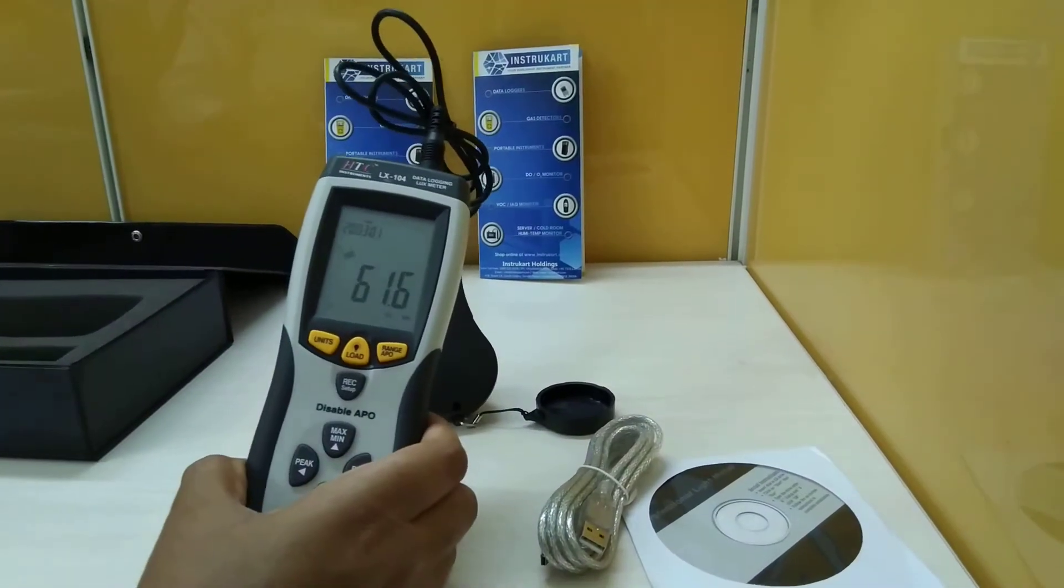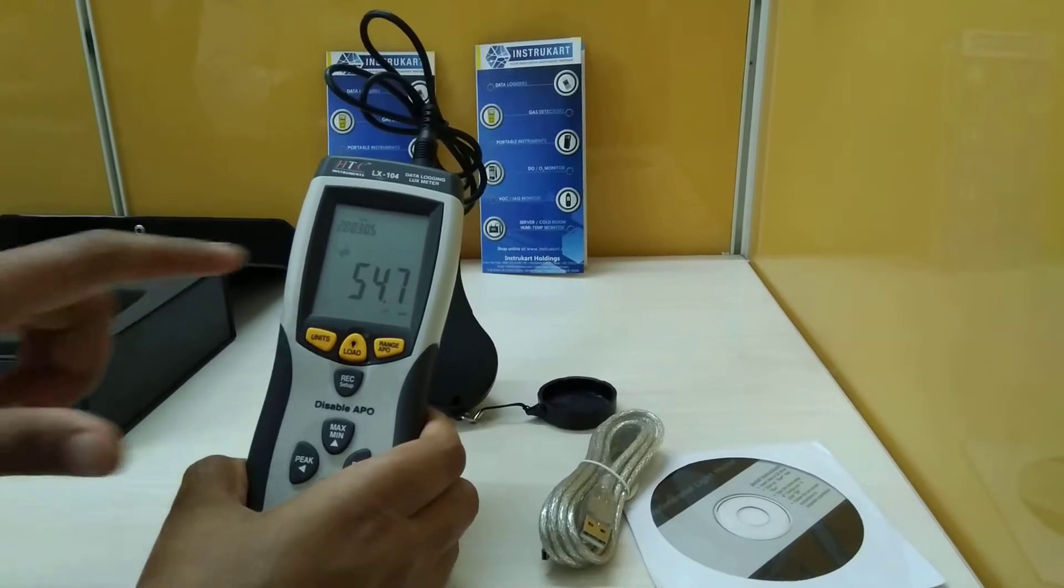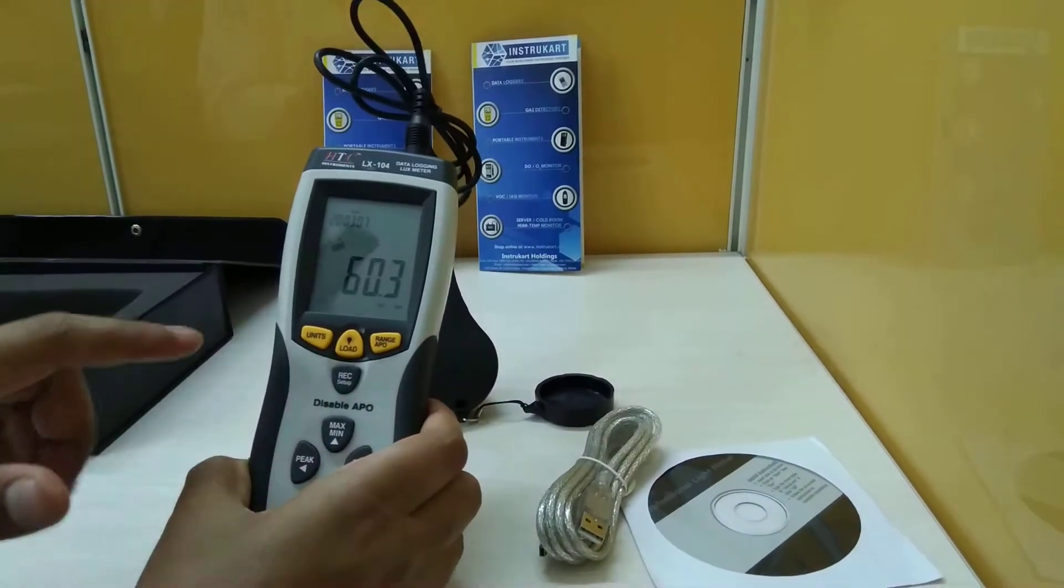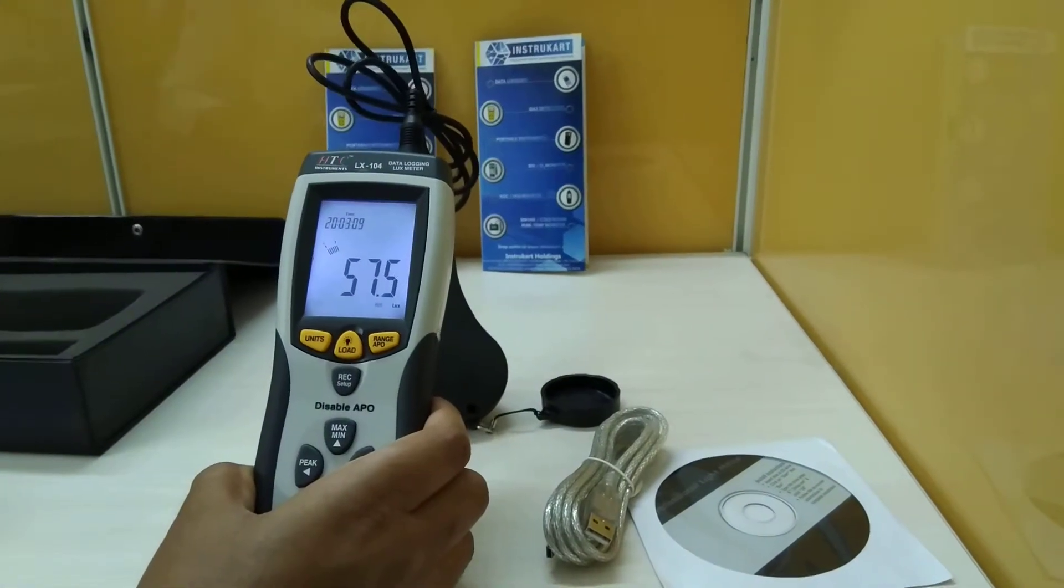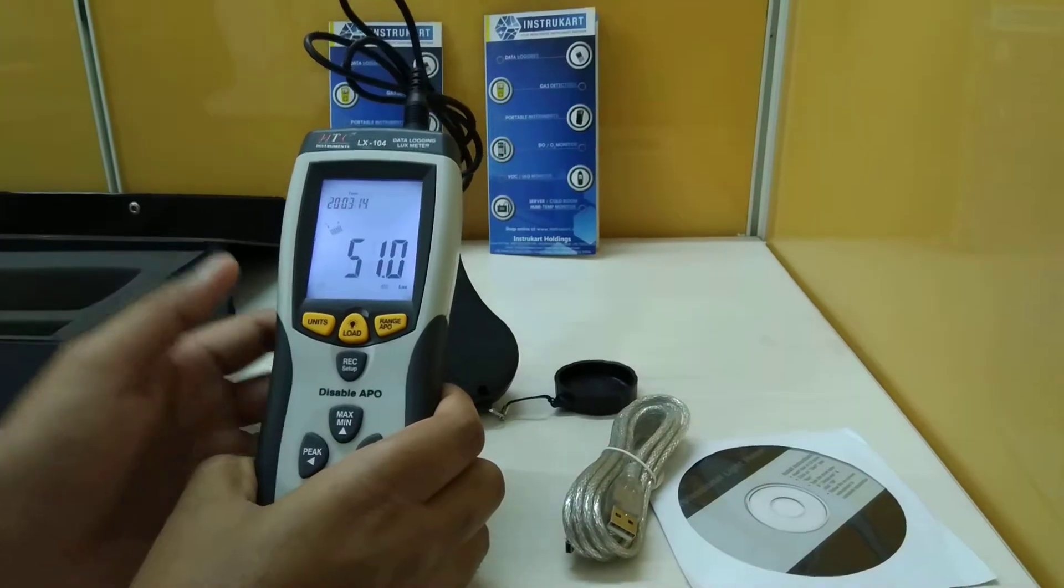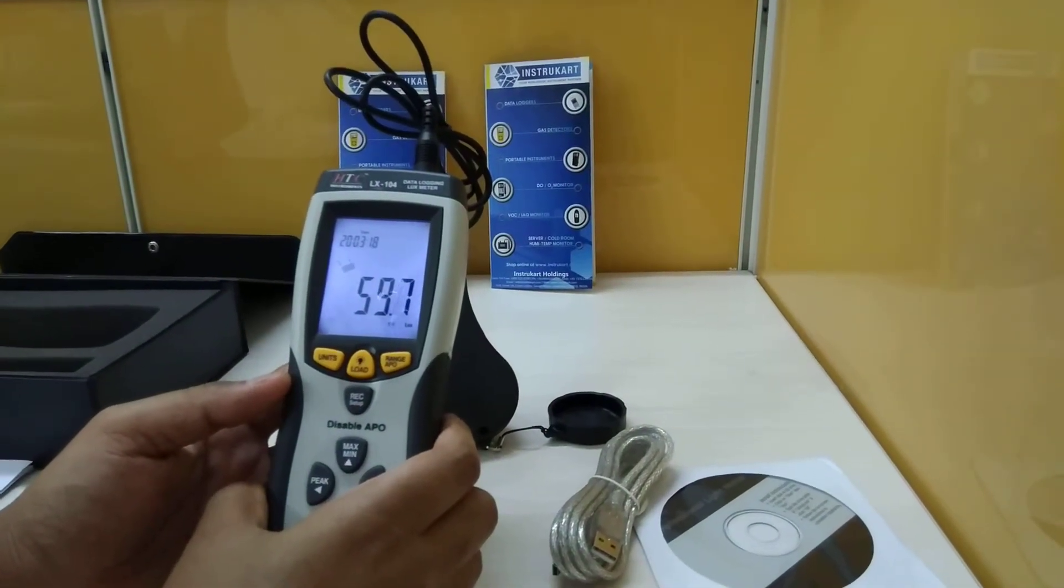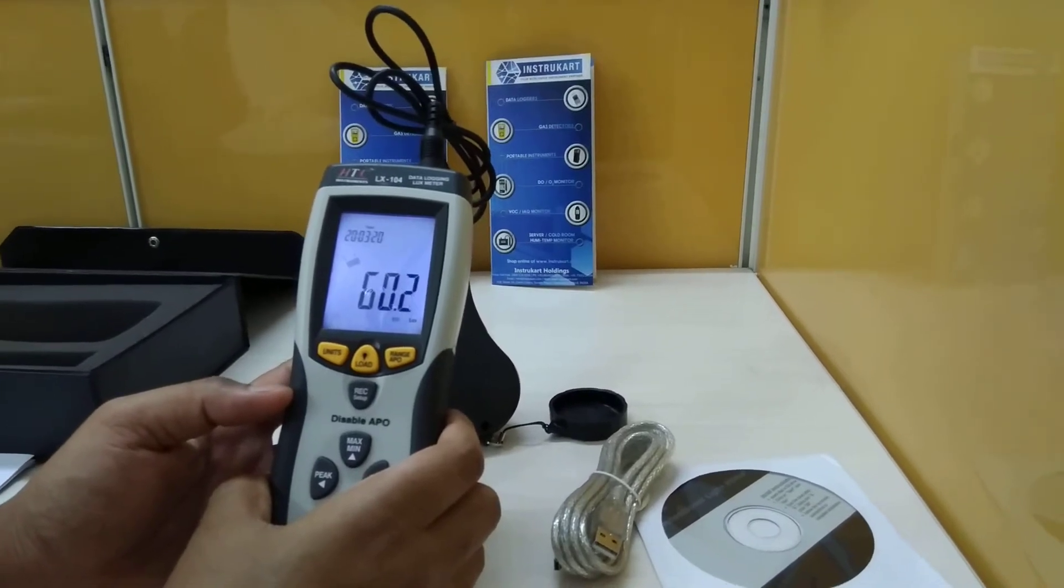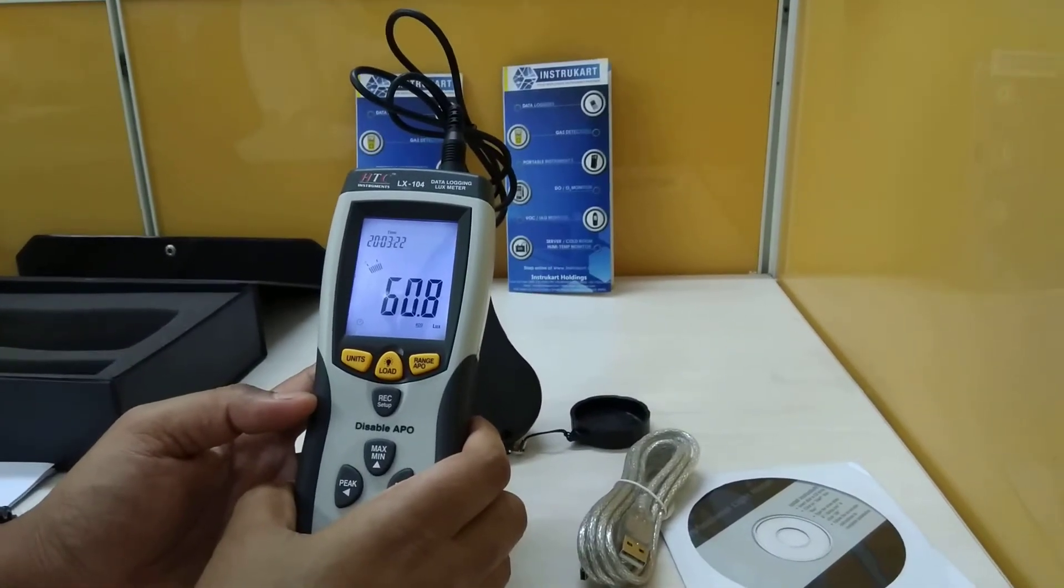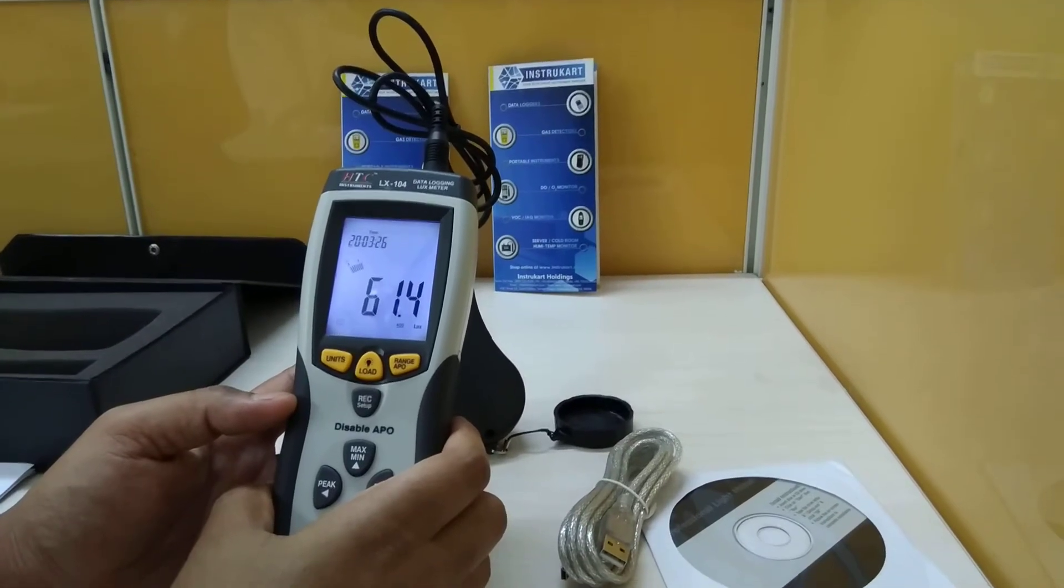This has an over-range display. The LCD will show an OL symbol, and the accuracy for this instrument is approximately 3% under 10,000 lux and 4% greater than 10,000 lux.